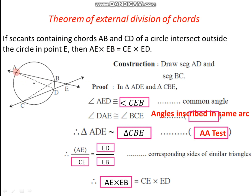That means, if there are two chords given for a circle and we draw secants containing those chords, and those secants intersect each other at a point which is outside the circle, then the product AE into BE is equal to CE into DE.